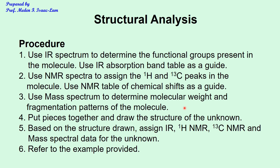You go back and forth between the structure and the data — it should not be conflicting or contradict the structure you wrote. You must use the IR absorption band table, the atomic weights for each atom, and the table of chemical shifts for proton and carbon-13 as a guide to determine where protons and carbons appear in the spectrum.